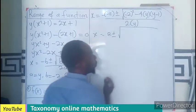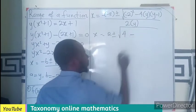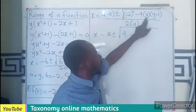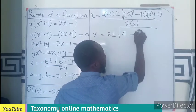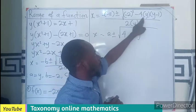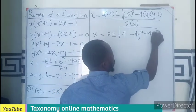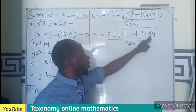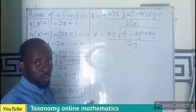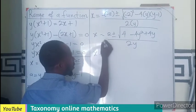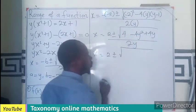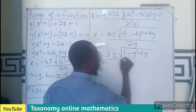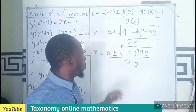Continuing to simplify: negative times negative gives positive 2, plus or minus the square root. We have (−2)² = 4, then minus 4y times (y − 1): that gives minus 4y² plus 4y, all over 2y. We see common factor 4 inside the root, so dividing through by 4 gives x = (2 ± √(1 − y² + y)) / (2y).